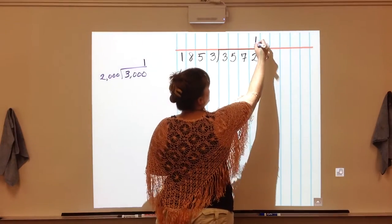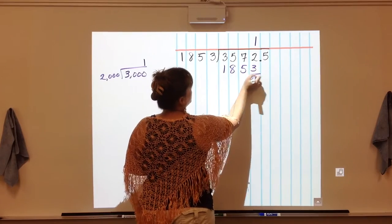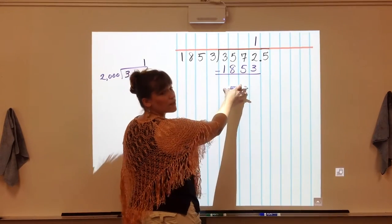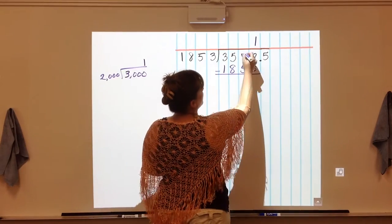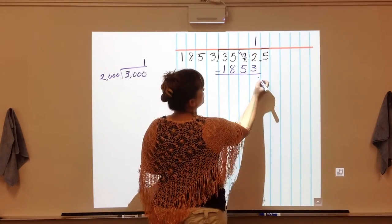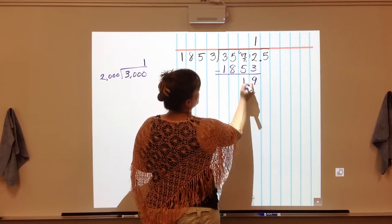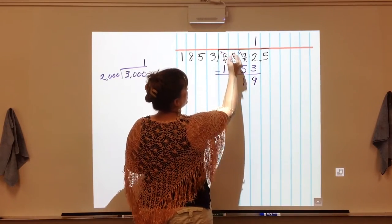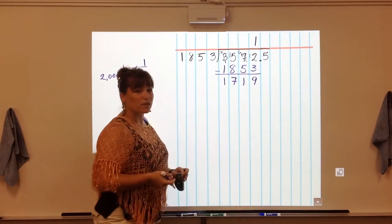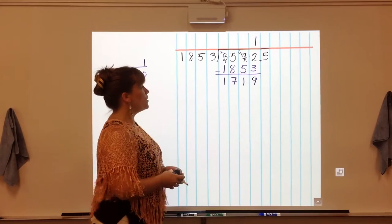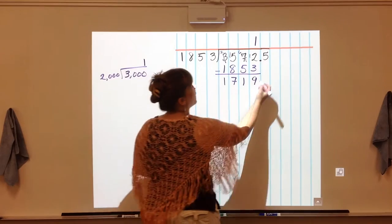So I'm going to put a 1 up here and the 1,853 underneath and subtract. If this ends up being bigger then I made a mistake but let's subtract and find out. So we have 1,719. So it's just a little under, we're good. Next we're going to bring down the 5.